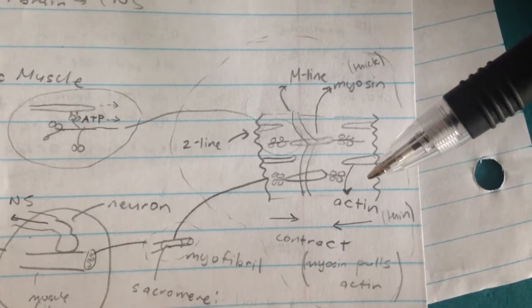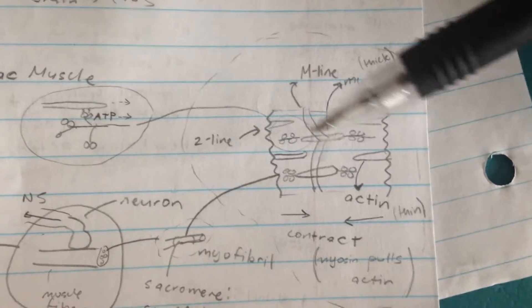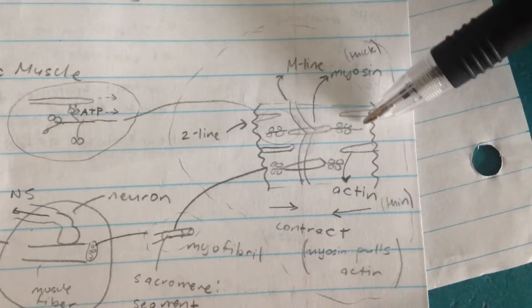Actin is the thin filament, which resides on the Z line, these filaments over here.